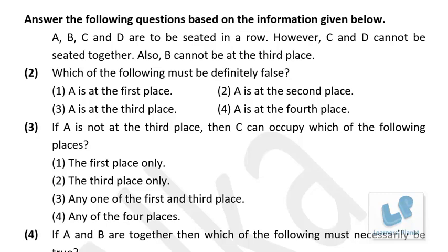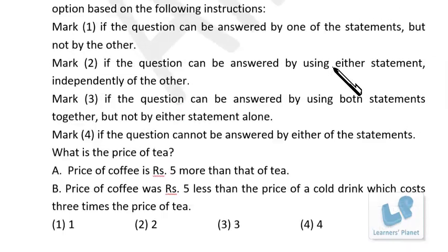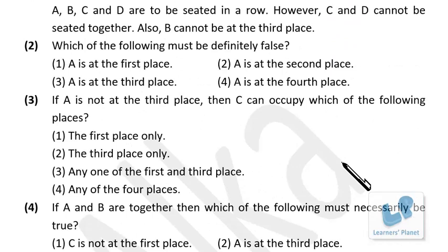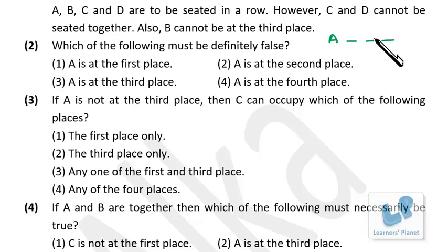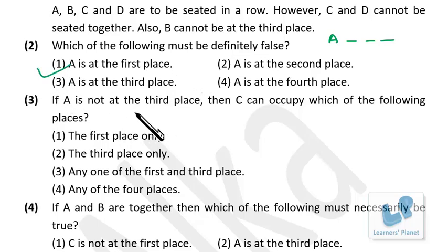New problem: A, B, C, D are to be seated in a row. C and D cannot be seated together, and B cannot be at the third place. Question: which must be definitely false? If A is at the first place, B must be at the second or fourth position. But in either case, C and D end up in adjacent positions — which is not allowed. So A being at the first place is definitely false.